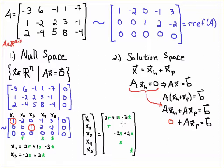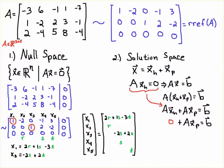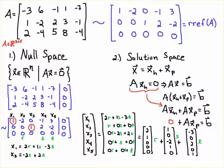Writing the solution as a vector, I break it up into three vectors. It helps to fill in zeros for the components associated with the other parameters. The three vectors come out as: (2, 1, 0, 0, 0), (1, 0, −2, 1, 0), and (−3, 0, 2, 0, 1).